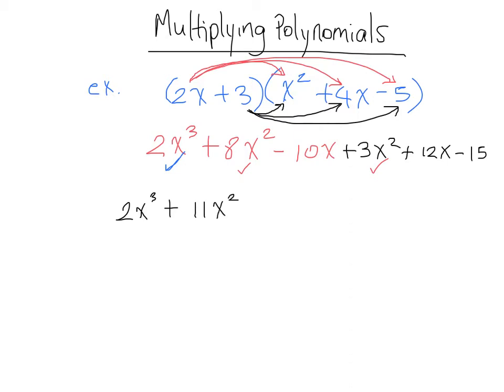Anything with just an x, I'm going to give a little black check mark. We have a negative 10x, we have a positive 12x, and nothing else. So negative 10x plus 12x gives us plus 2x.